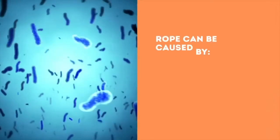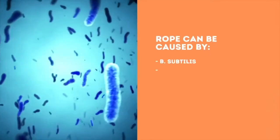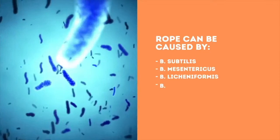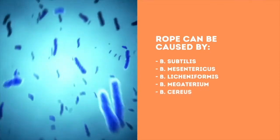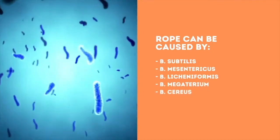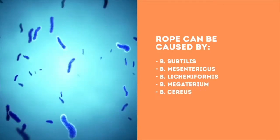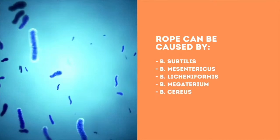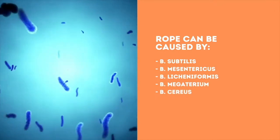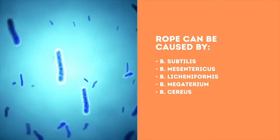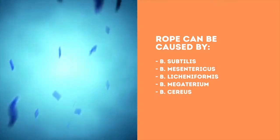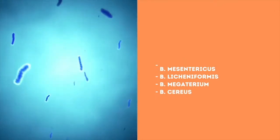How does it work? Rope in bread is primarily caused by B. subtilis and B. mesentericus. However, B. licheniformis, B. megaterium, and B. cereus are also capable of causing rope.